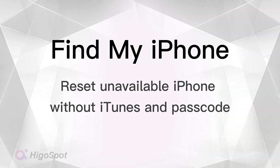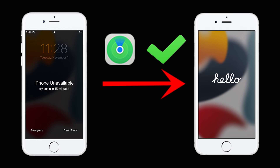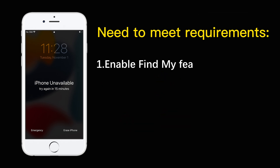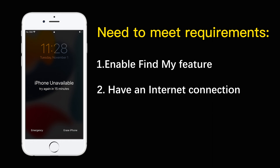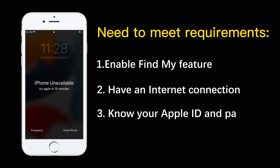If you have lost an iPhone with the Find My iPhone option activated, you can find it by logging into iCloud in a browser. This feature will also allow you to reset an unavailable iPhone remotely without passcode and iTunes. To use this feature, your unavailable iPhone should have Find My enabled and a network connection, and you should also have your Apple ID password on hand.